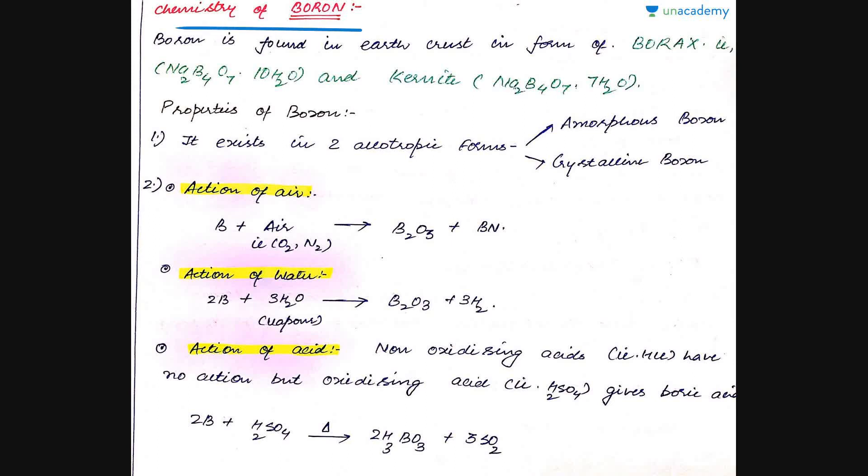Boron is the element which belongs to group 13 of the periodic table and has an electronic configuration of 1s2, 2s2, 2p1. Because of its outer shell electronic configuration of ns2 and p1, it shows possible oxidation states of plus 1, plus 2, and plus 3, among which plus 3 is the most stable.